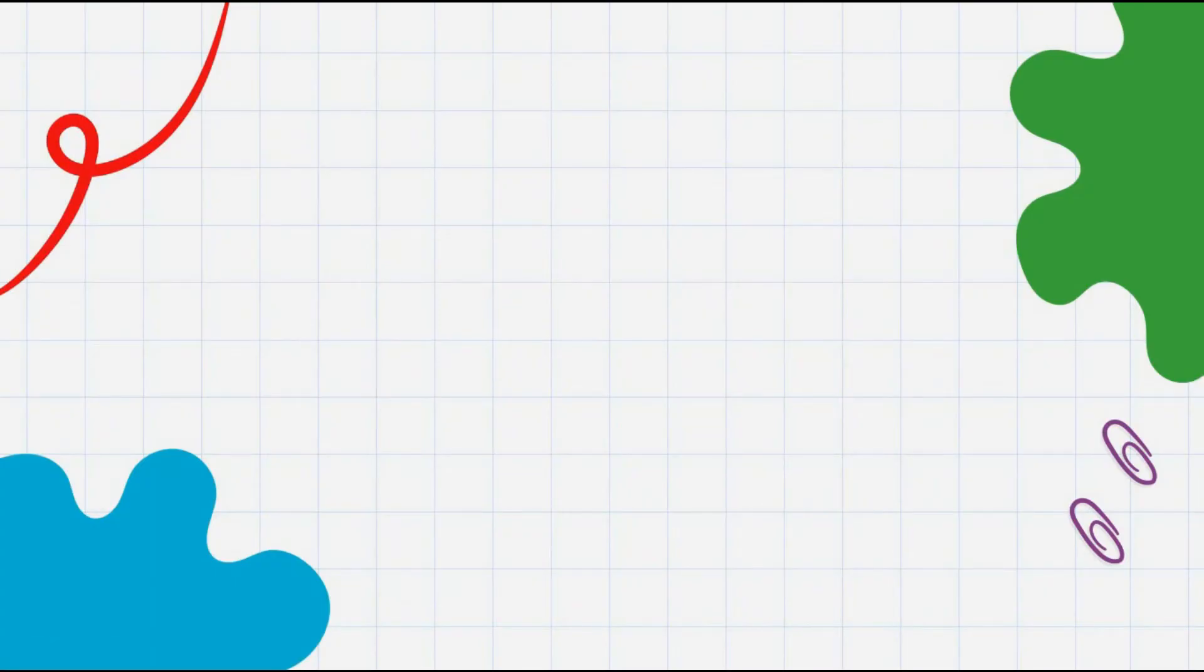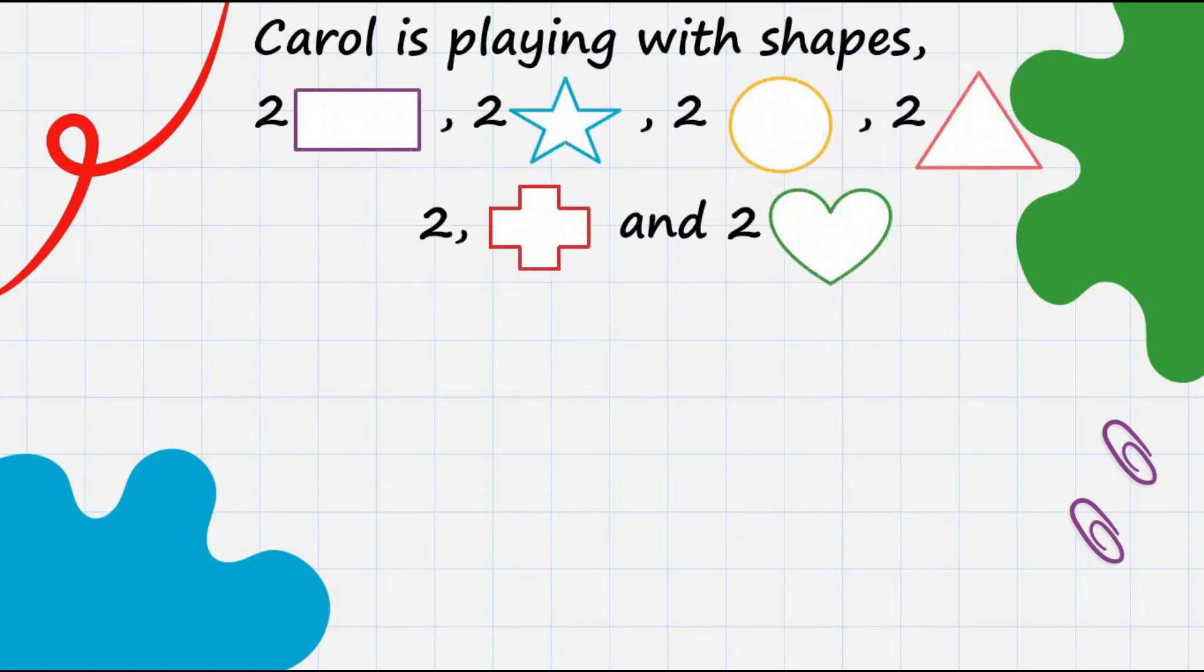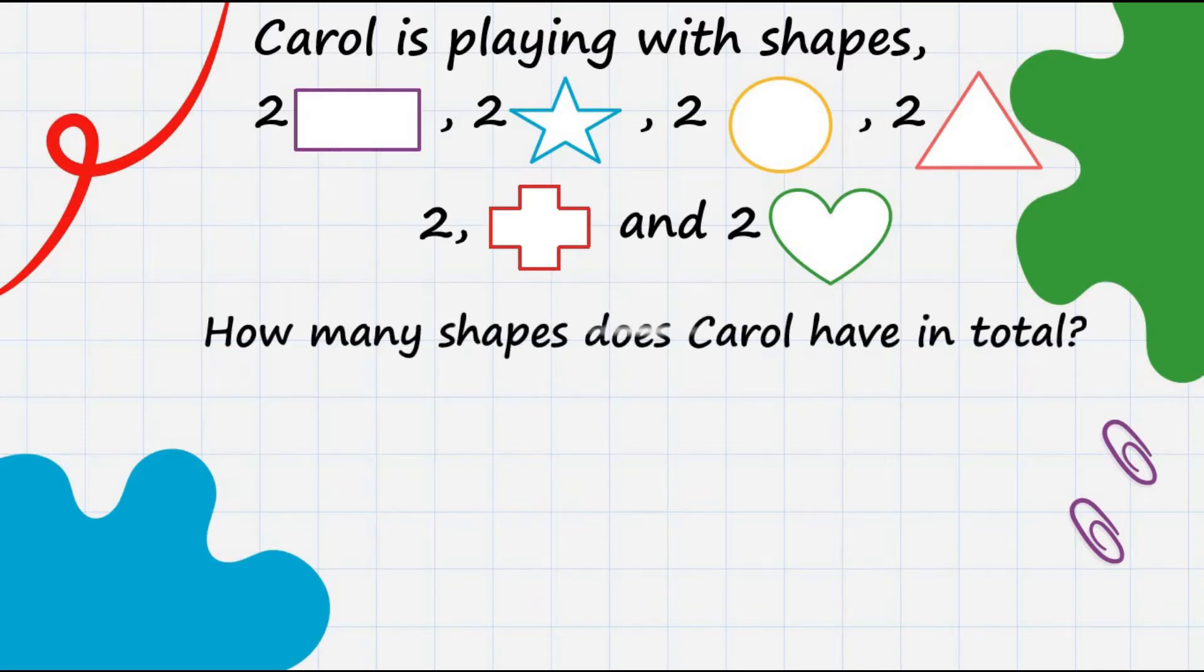Let's try another example. Carol is playing with shapes. She has 2 rectangles, 2 stars, 2 circles, 2 triangles, 2 crosses, and 2 hearts. How many shapes does Carol have in total?